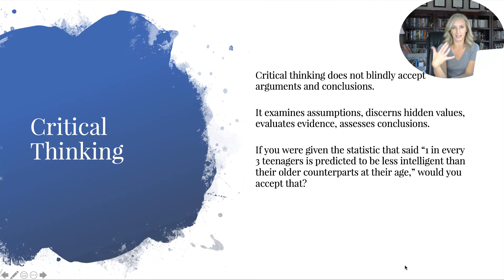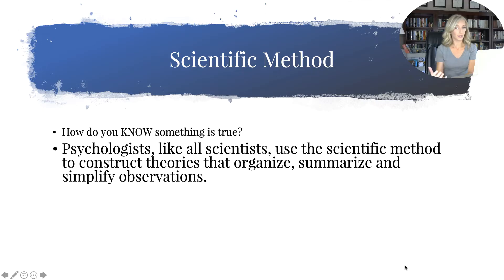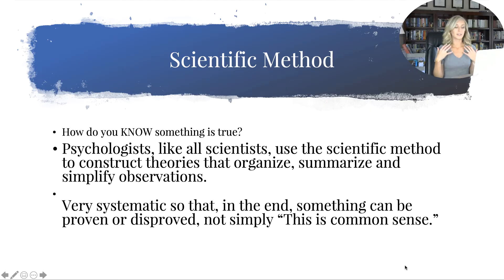So that's when skepticism is really crucial. The scientific method—I'm hoping this is kind of a review for you, so I'll go quickly—but how do you know that something is true? And really you could go bigger than that. We'll get kind of philosophical here: what is truth? How do you know if something is close to truth? Well, psychologists, like all scientists, use that scientific method to construct those theories, which in the science world, theories, although not truth, are as close to truth that scientists recognize we could ever be. So they use those theories to then organize, summarize, and simplify those observations so that other people can digest and consume them. It's very systematic, so that in the end something can be proven or disproved—not simply, "That's common sense." No, we don't say that. How do we know that?